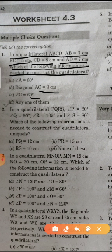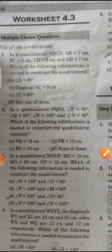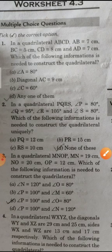You can construct the quadrilateral with any of these measurements in the 3 given options. We can draw the construction with angle A = 80° or diagonal AC. These give different constructions, so option D — 'all of these' — is correct. Practice drawing diagrams with all 3 options.